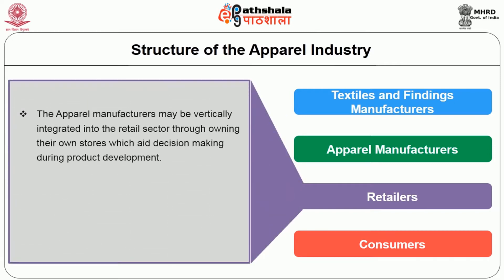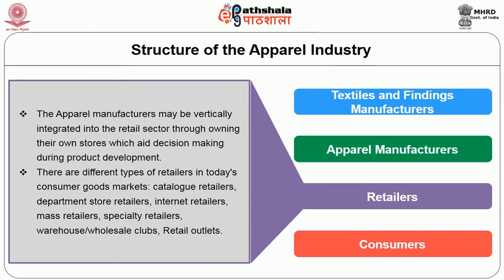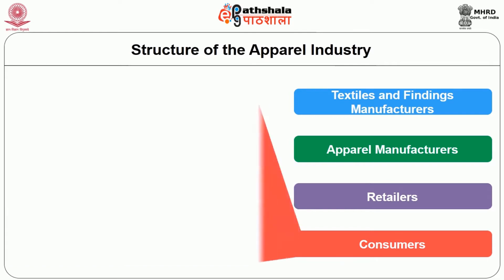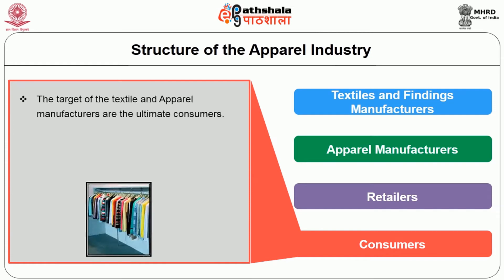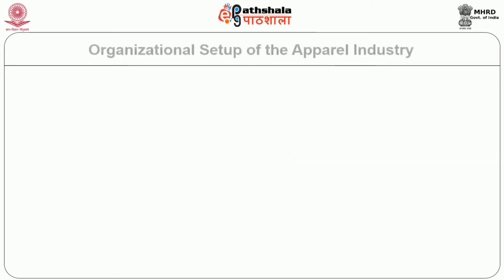Stage 3: Retailers. The apparel manufacturer may be vertically integrated to the retail sector through owning their own stores, which aids in decision making during product development. There are different types of retailers in today's consumer goods market: catalog retailer, department store retailer, internet retailer, mass retailer, specialty retailer, warehouse or wholesale club, and retail outlet. Stage 4: Consumer. The target of the textile and apparel manufacturer are the ultimate consumers. Satisfied consumers make business growth and profitability possible. Decisions made at all levels are based on forecast of consumer demand.